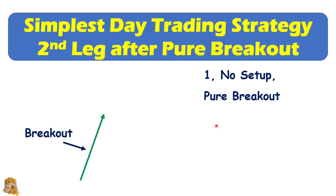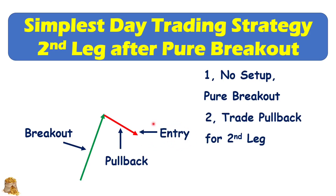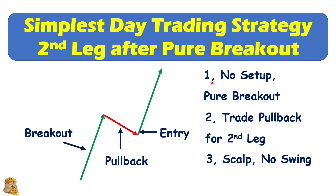After this pure breakout, you want to wait for the pullback and then trade for the second lag. When we see a signal bar, we do the entry and then trade the second lag up. We only scalp — do not swing. For this strategy, basically there's no setup. If there is a setup, you need to follow the strategy for that setup.